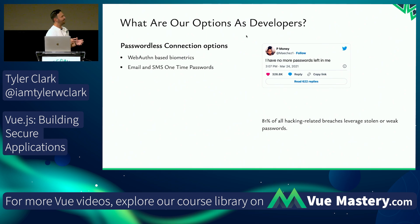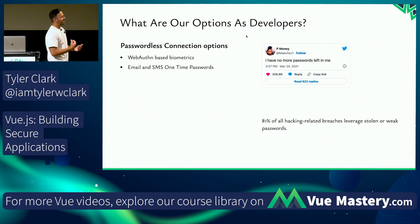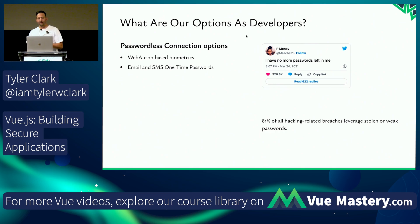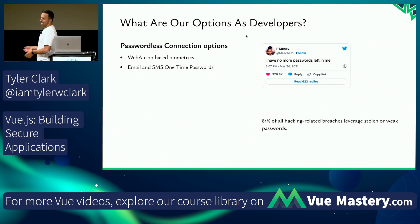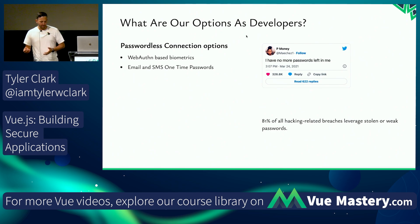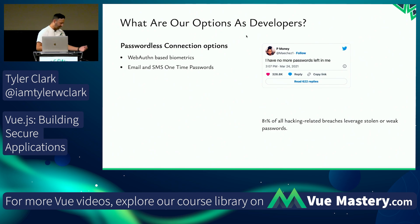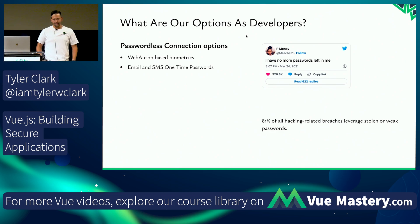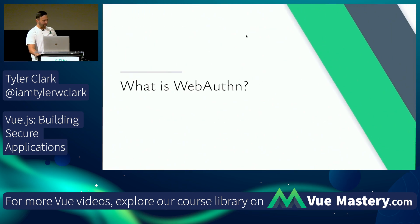There are a couple of options as developers that we can use so that we don't have to rely on users giving us a text-based password. One is WebAuthn, which I'm going to talk about, and another is email and text one-time passwords. It's a little annoying and might break the UX, but you can send a code that expires in five minutes for users to sign in with.